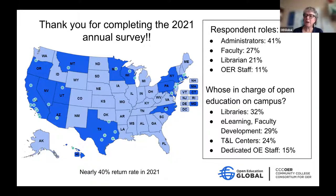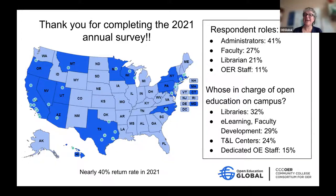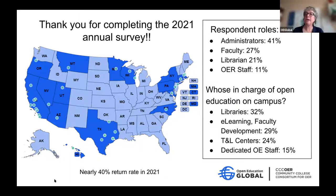Dedicated OER staff continues to be a minority at our institutions and organizations. Most institutions have not established an OER department, though a few have. As for who is in charge of open education on campus, libraries came out as the top department, but e-learning and teaching and learning centers are also critical leaders in this area.